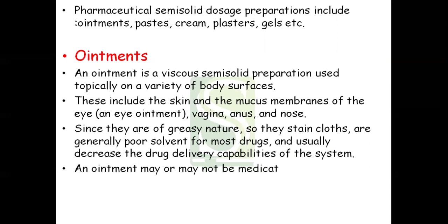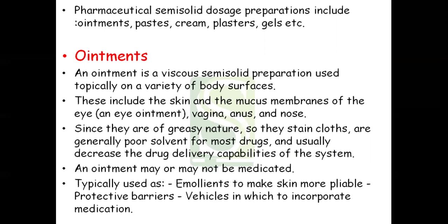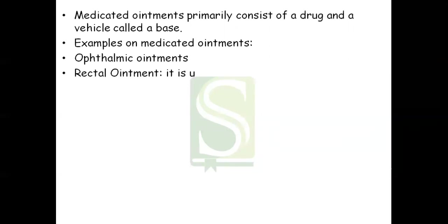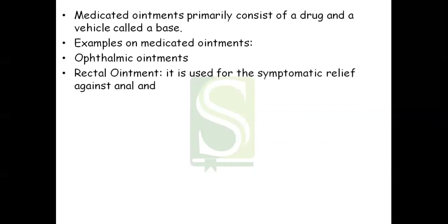An ointment may or may not be medicated. Typically it is used as an emollient to make the skin more pliable, or it can be used as protective barriers, and it is also used as a vehicle in which to incorporate medication. The medicated ointments consist of a drug and a vehicle called the base. Examples of medicated ointments mostly include ophthalmic ointments and rectal ointments.